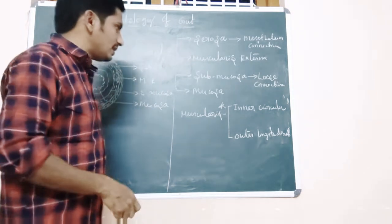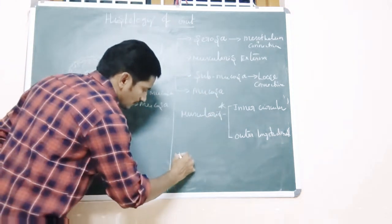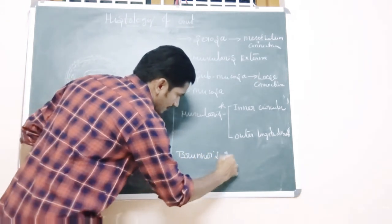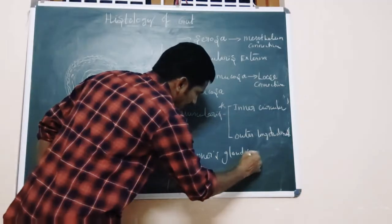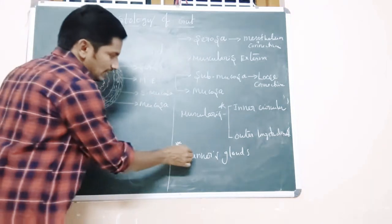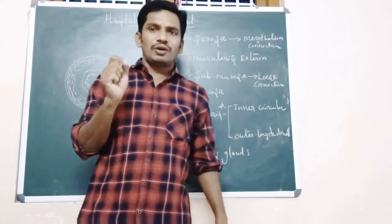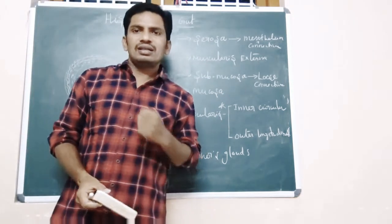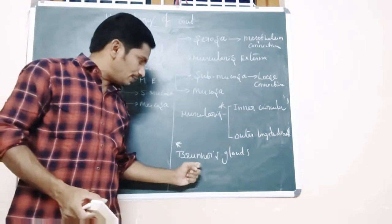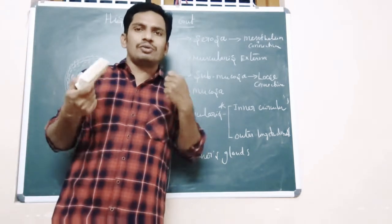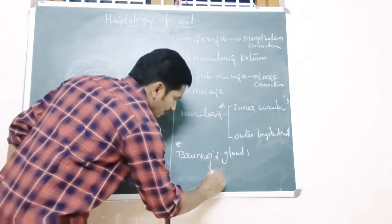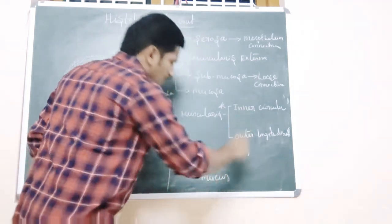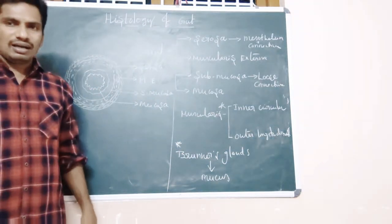One important thing: the submucosa contains Brunner's glands. This is very important — Brunner's glands are present in the submucosa of the gut. The function of Brunner's glands is that they secrete mucus.